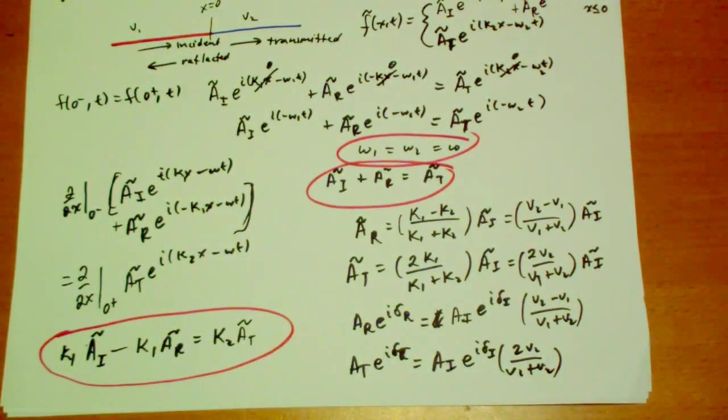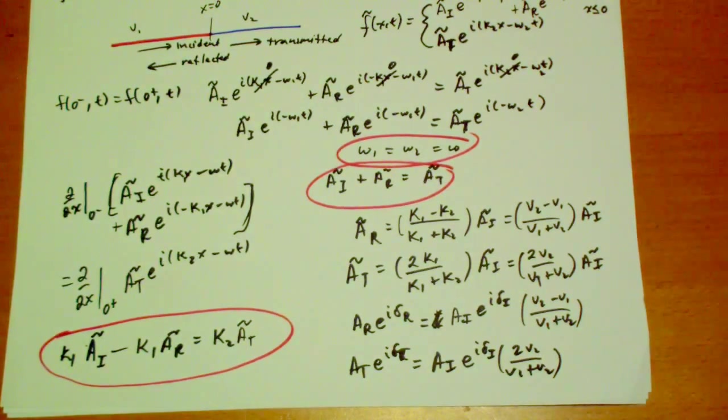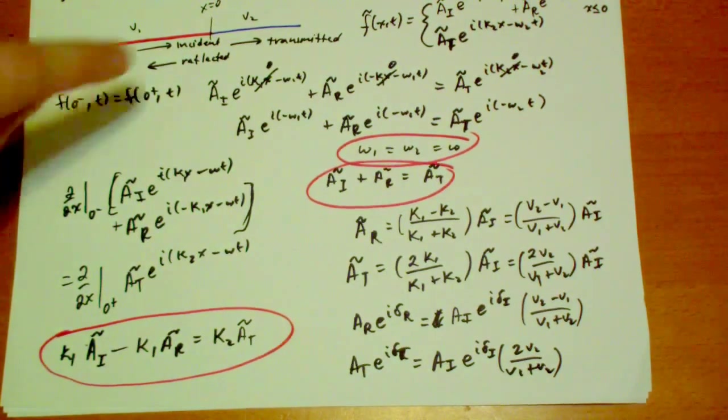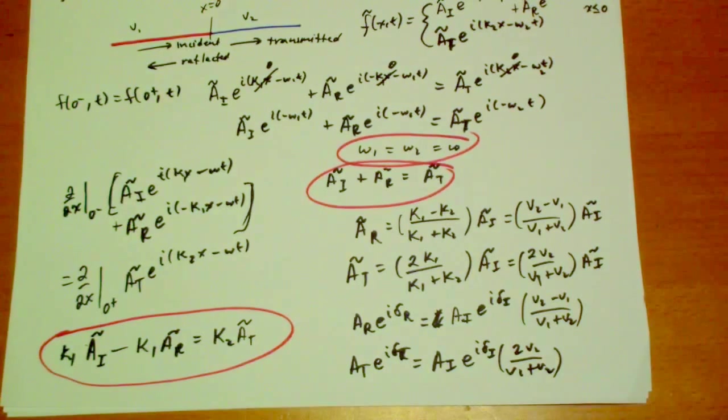So that's pretty much all there is to say about what happens when you have a wave traveling through a boundary. We're going to see a very similar situation when we get into electromagnetic waves and how they behave in non-conducting media, which is the next section after this. And there's not much else to say here.